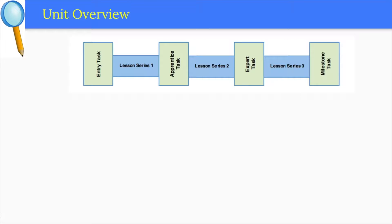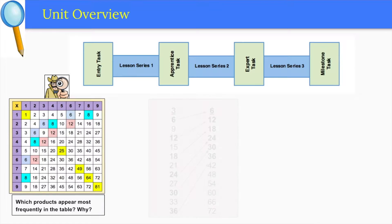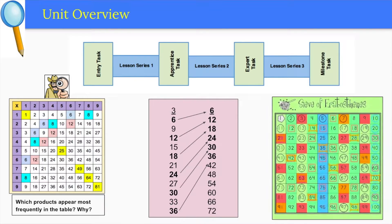Students start this unit using what they already know about factors such as in this multiplication table to identify how many factors a number has. This leads to defining prime and composite numbers. They then explore what they already know about multiples by creating lists to identify shared multiples and patterns in the list themselves. Finally, students apply the concept of multiples as they use the ancient tool known as Eratosthenes Sieve to identify all prime numbers between 1 and 100.